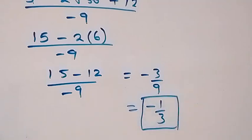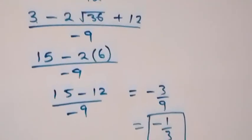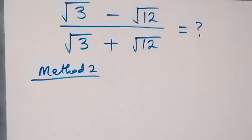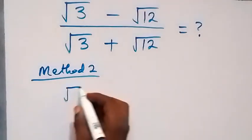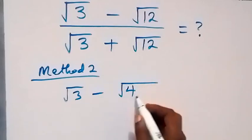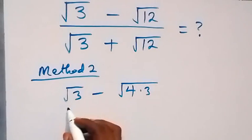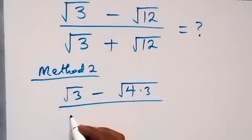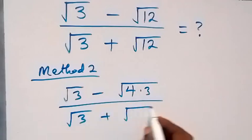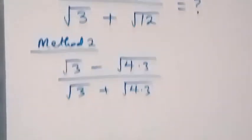Let's use another method here. We can separate this root 12 as root 4 times root 3. So this will be root 3 minus root 4 times 3, divided by root 3 plus root 4 times 3 as well.